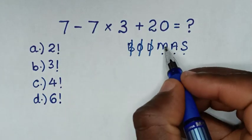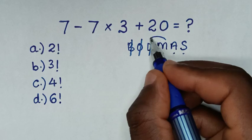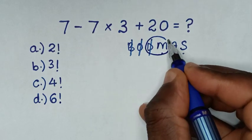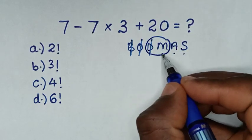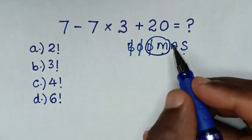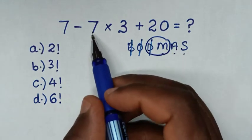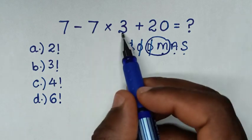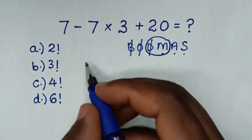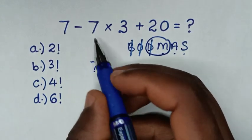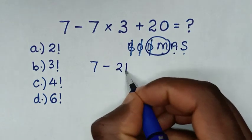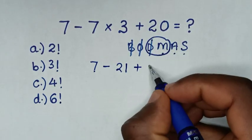So we start to deal with this group of division and multiplication, but we don't have division so we deal with multiplication only. Now we have multiplication of 7 times 3 which is 21. So it will be 7 minus 21 plus 20.